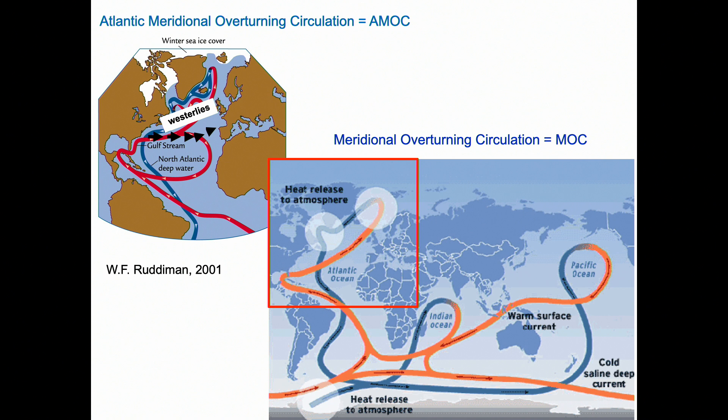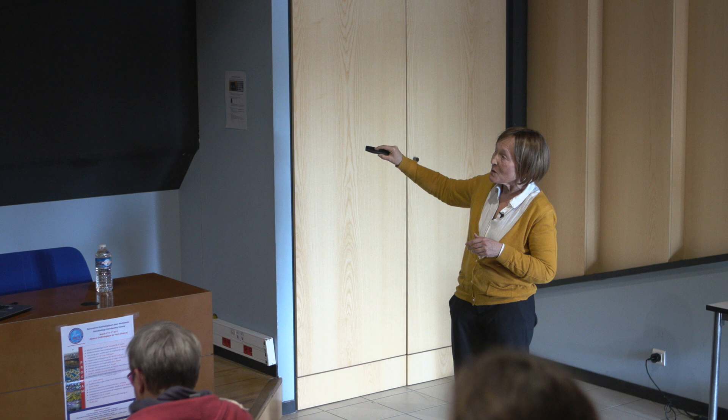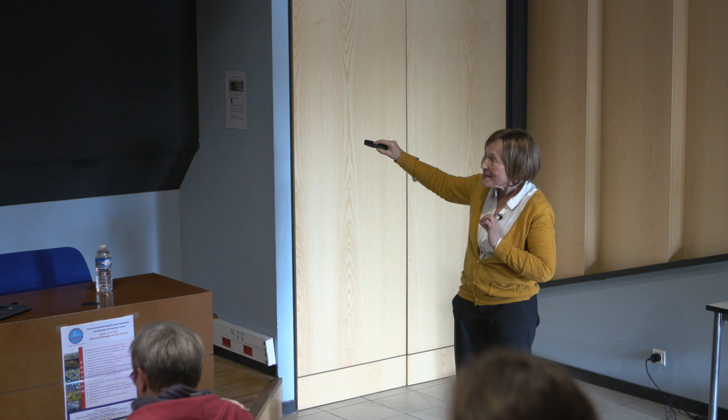The Gulf Stream brings warmth mainly to Europe because it's pushed by the Westerlies, and the Westerlies are forced by the Coriolis force that goes from west to east. When this warm surface water goes little by little to the north, it densifies because it finds cold waters. In this part, mainly in the Nordic Seas but also in the Labrador Sea and north of Iceland, this dense water sinks. And by sinking it releases heat in the North Atlantic, mainly in the Nordic Seas.